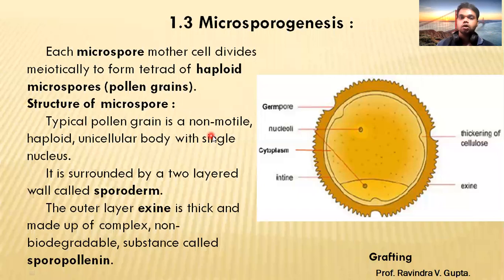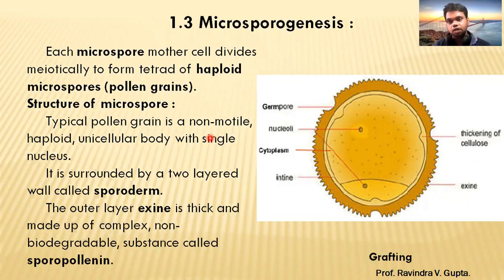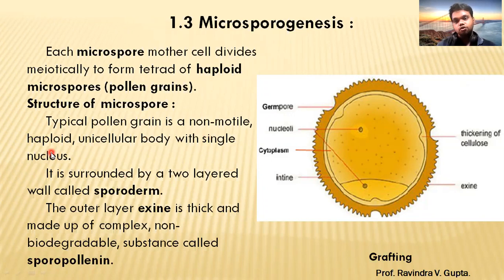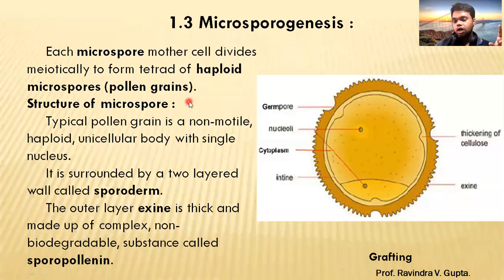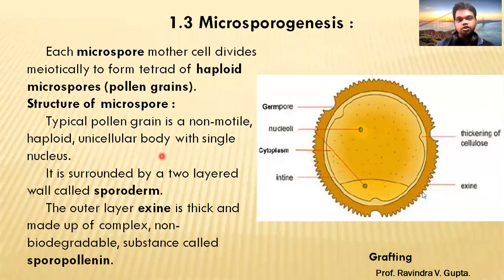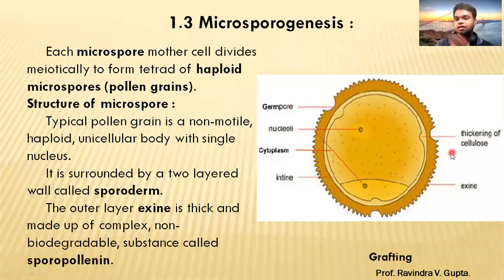A typical pollen grain is non-motile. In a human male, the sperm forms a tail and has movement, but here the pollen grain in a plant is non-motile. Haploid means the cell has only a single set of chromosomes — it is called a haploid unicellular body, with a single nucleus present.